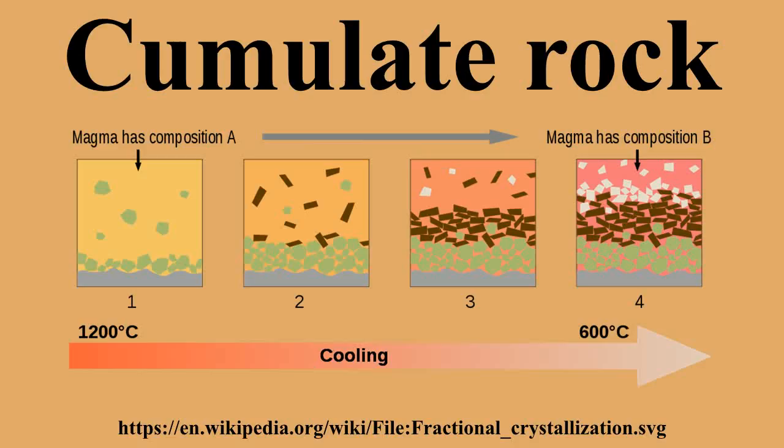The effect on the composition of the residual melt left behind by the formation of the cumulate is dependent on the composition of the minerals which precipitate, the number of minerals which co-precipitate at the same time, and the ratio of the minerals which co-precipitate. In nature, cumulates usually form from two mineral species, although ranges from one to four mineral species are known.